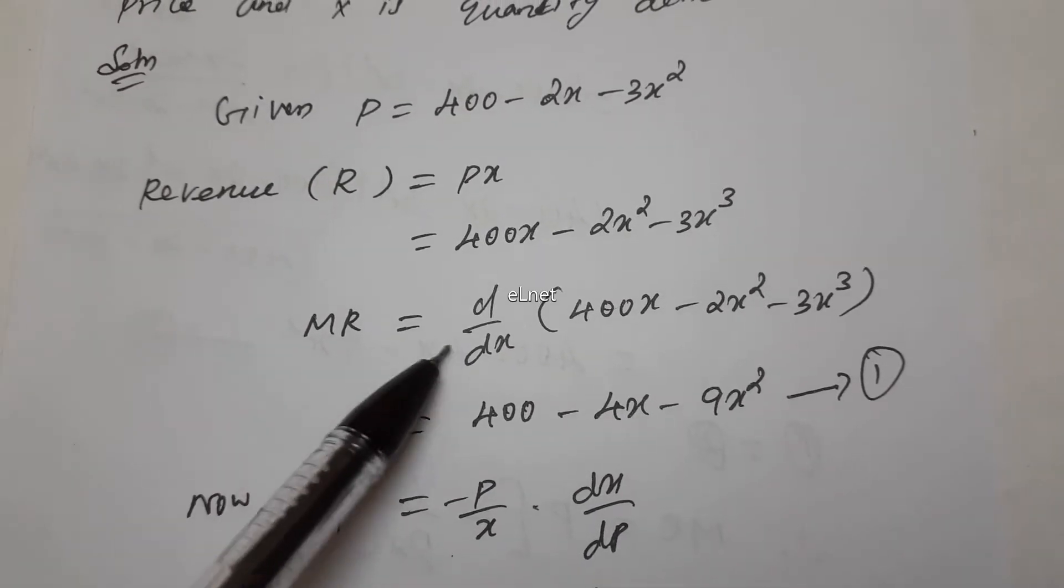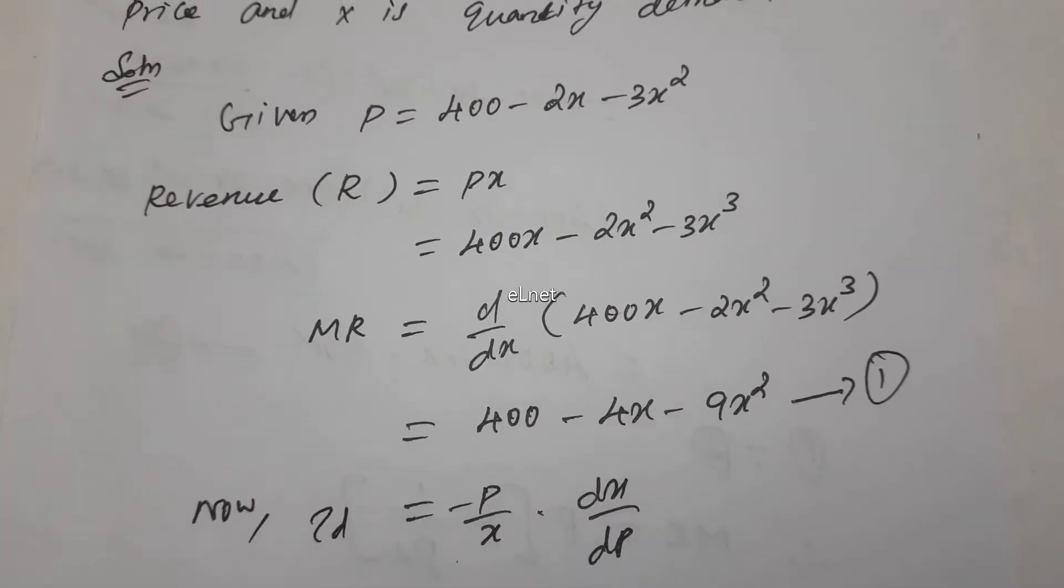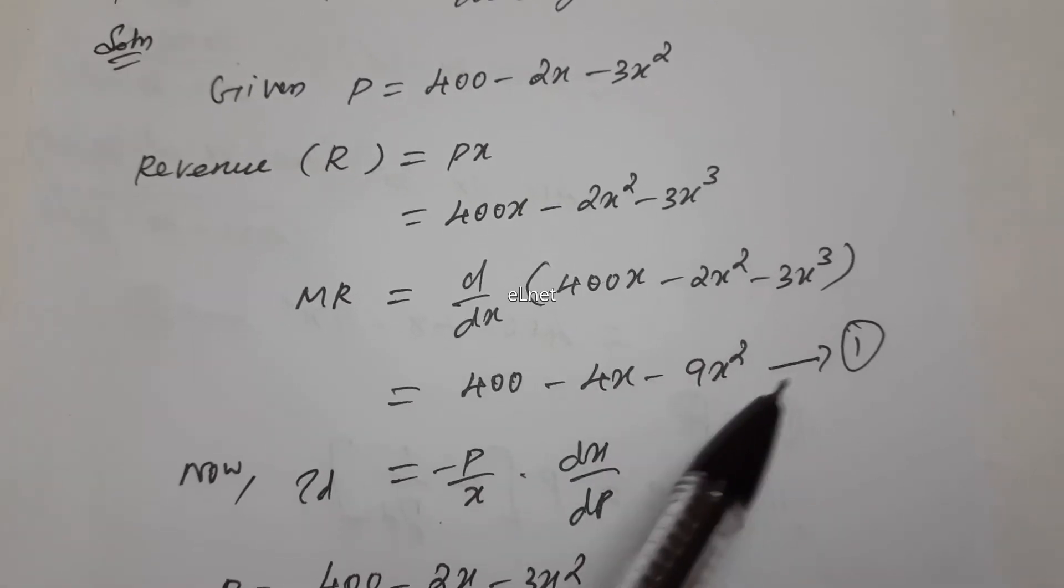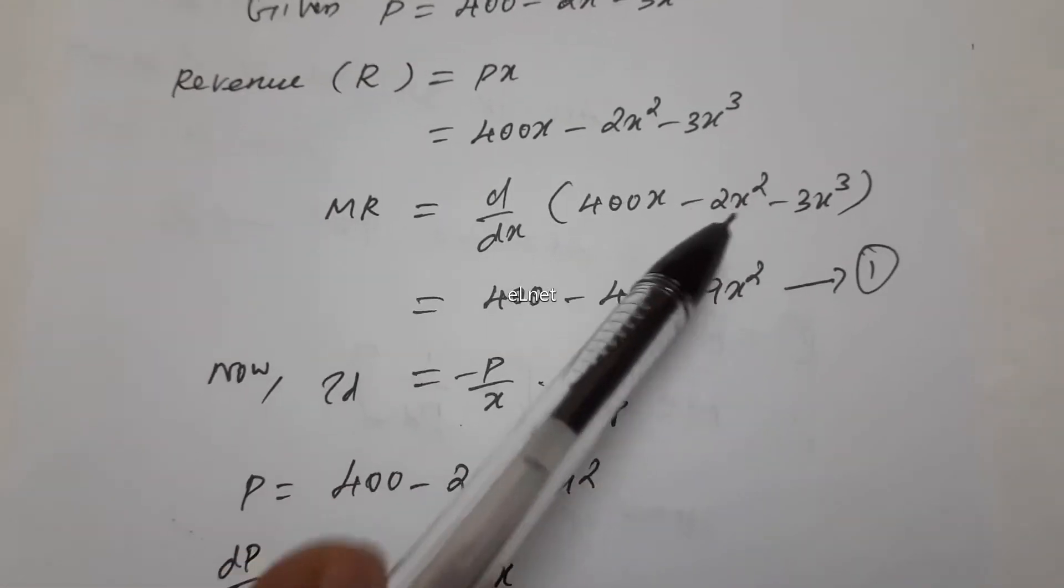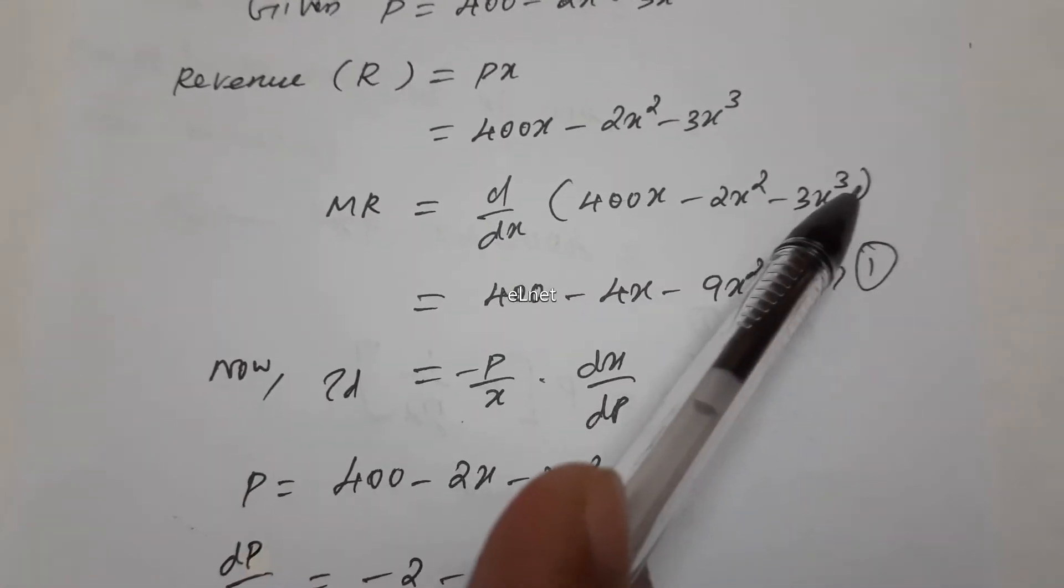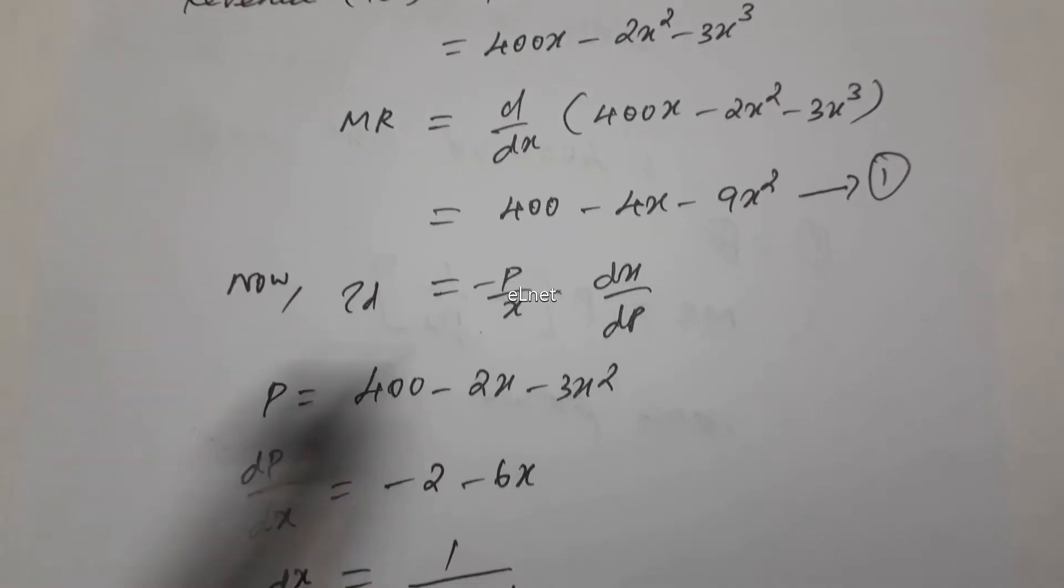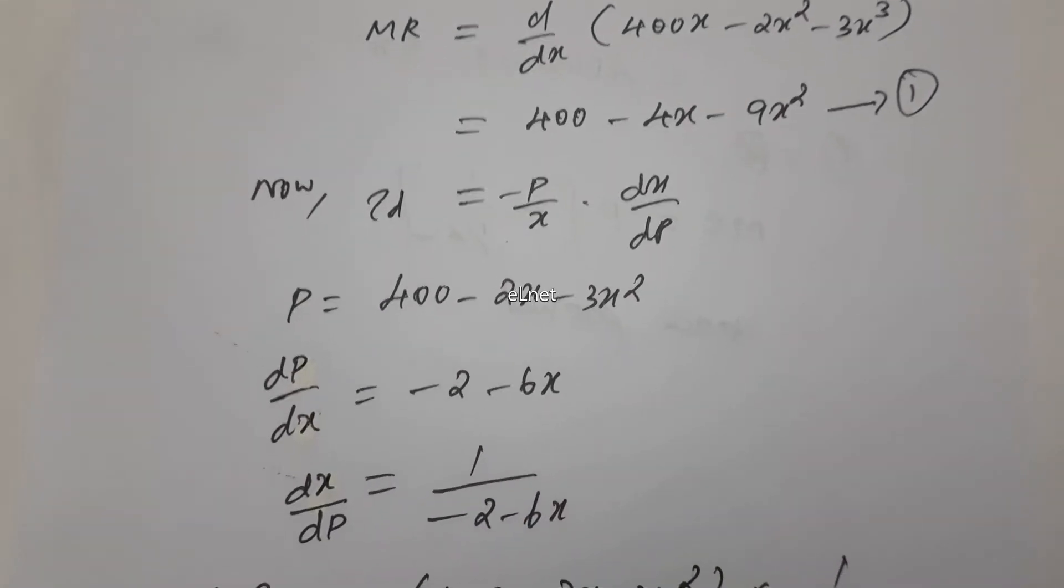Next, Marginal Revenue is equal to d by dx of R. So, differentiating: 400 minus 4x minus 9x squared. This is equation 1, Marginal Revenue.